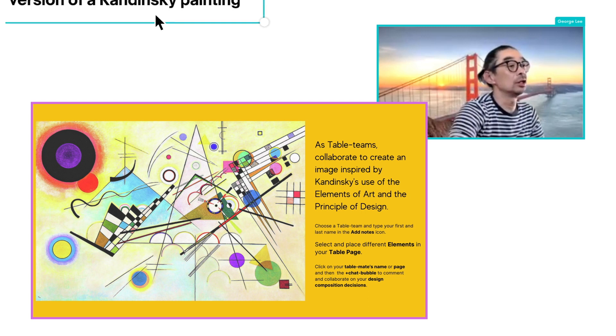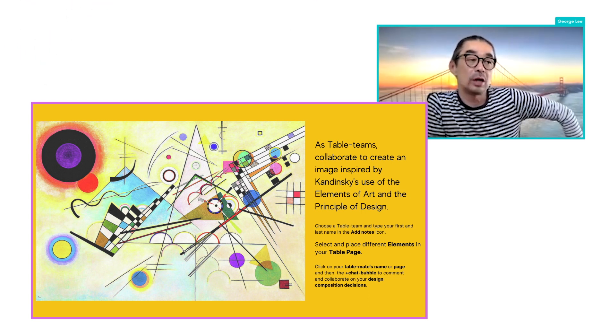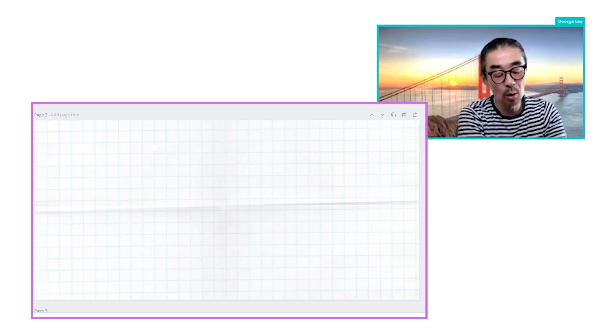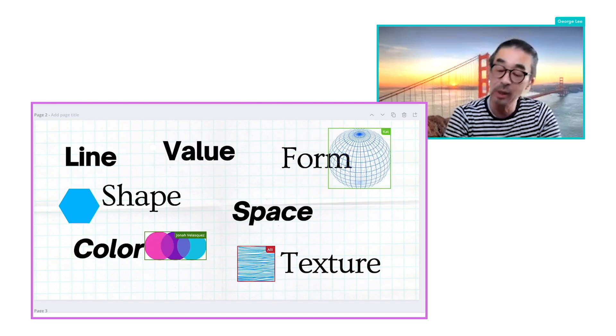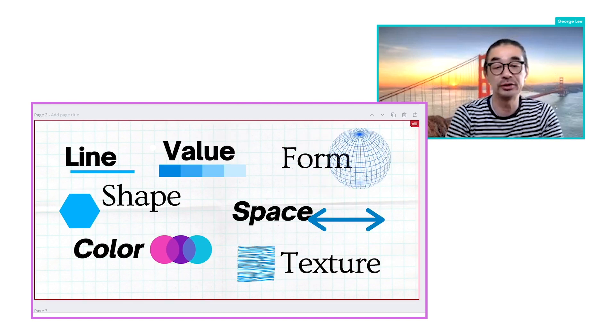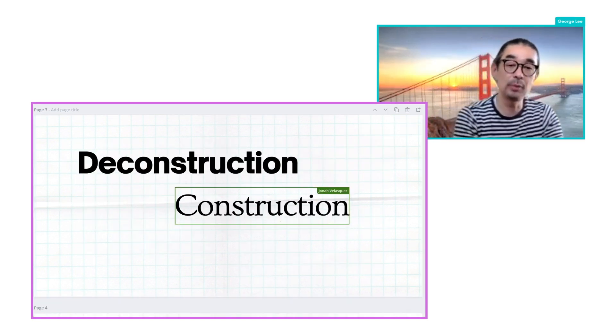What we see here is the Kandinsky assignment that we use to teach the elements of art and the principles of design. One of the curricular things has to do with perception — the more you look, the more you see. The second curricular lens is called deconstruction/construction. We purposely use the word deconstruction because we want students to take things apart, and then reconstruct and build their own understanding. Those are the two curricular foundations of this lesson.